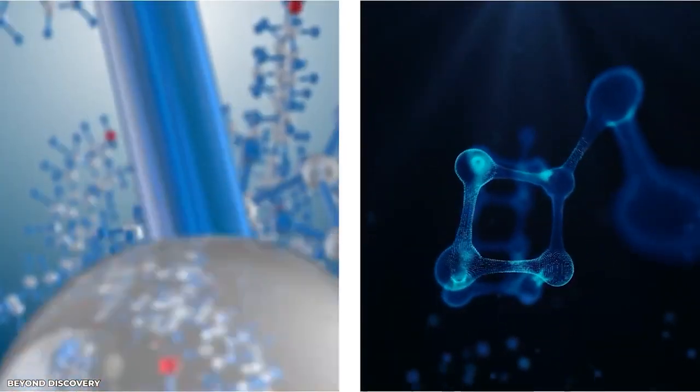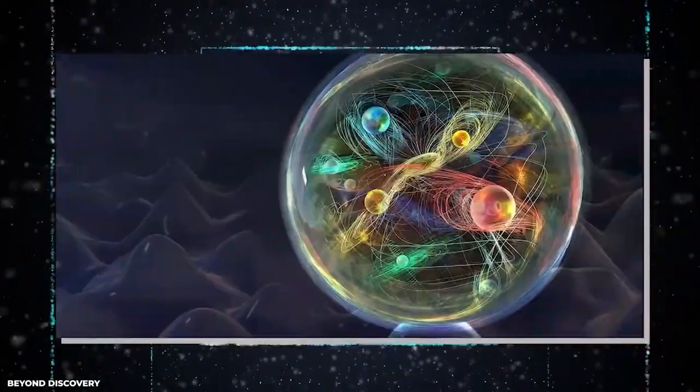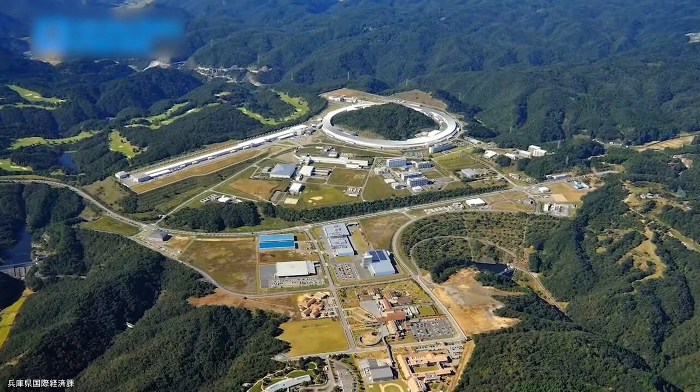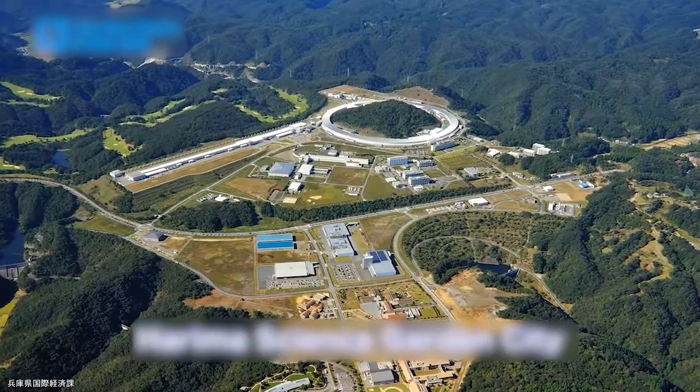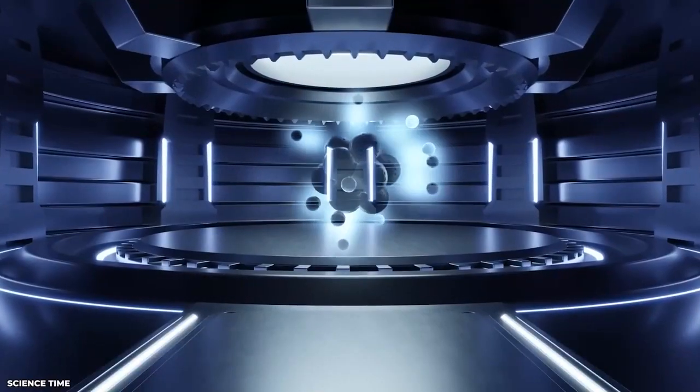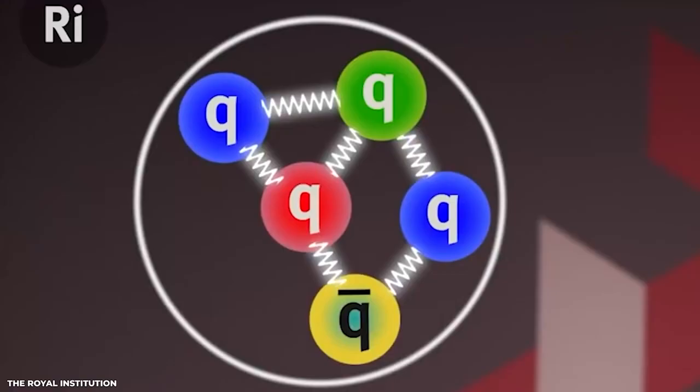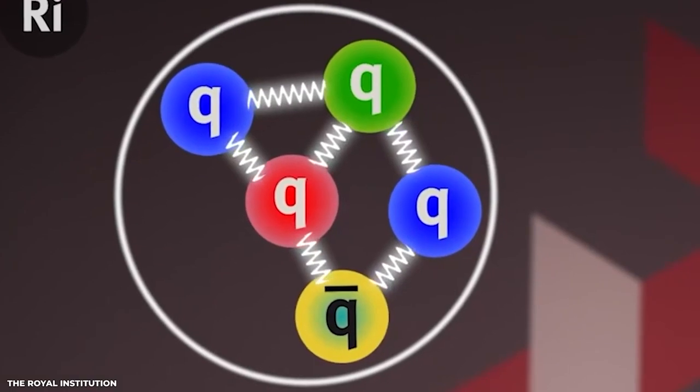The first experimental evidence for the existence of pentaquarks was reported in 2002 by a team of physicists at the Spring 8 Synchrotron in Japan. They observed a peak in their data that could not be explained by any known particle and concluded that it was likely the result of a pentaquark.